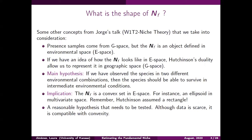Hutchinson assumed that the fundamental niche was a hypervolume or a rectangle in a wide-dimensional space, but we're going to be incorporating different shapes, in particular ellipsoids. Present samples come from the geographical space, but we're going to use Hutchinson's duality to go from geography to environmental space and vice versa. If we learn something about the shape of the fundamental niche in environmental space, we can use this property to go back to geography and represent the fundamental niche there.